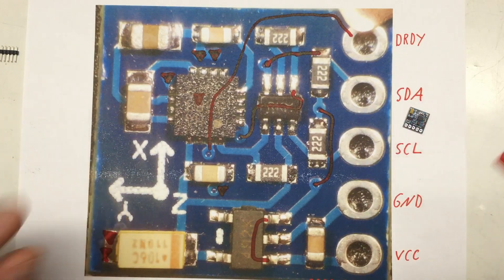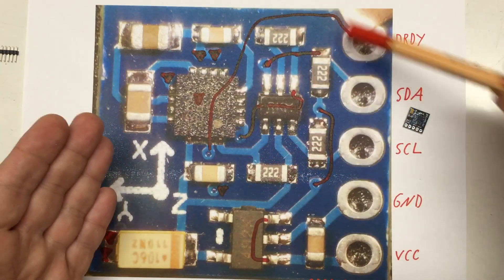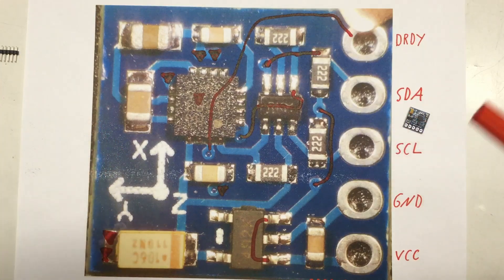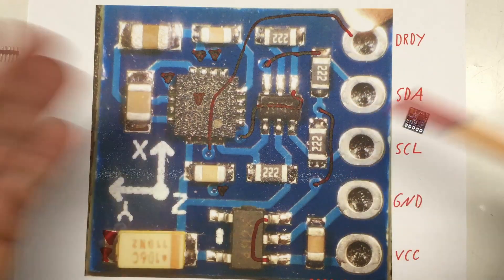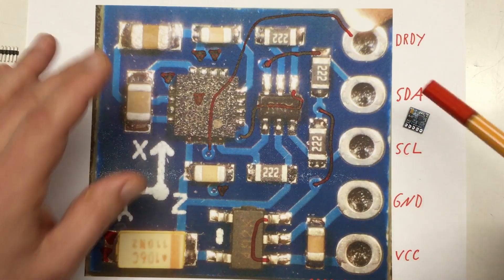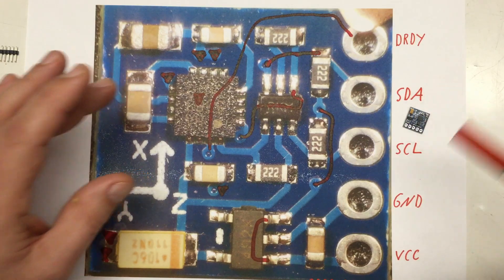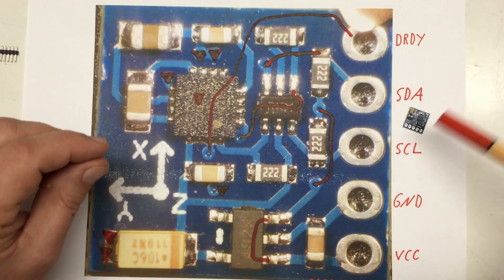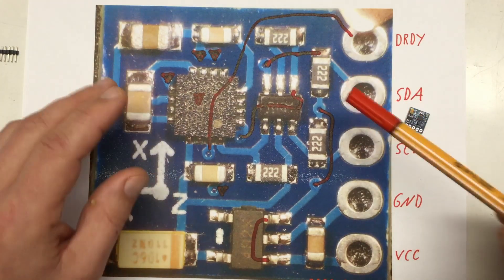A little warning at that point. There are modules out there that don't have this elaborate level shifting for the I2C bus. So if you connect them to a 5-volt microcontroller like your usual Arduino Nano, you have to be careful. Don't pull them up to your Arduino 5-volt rail. Just pull them up to the Arduino 3.3-volt rail.